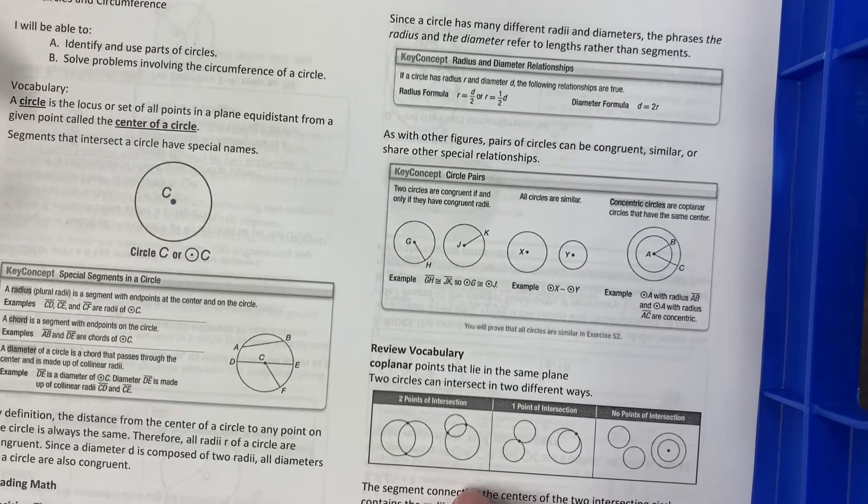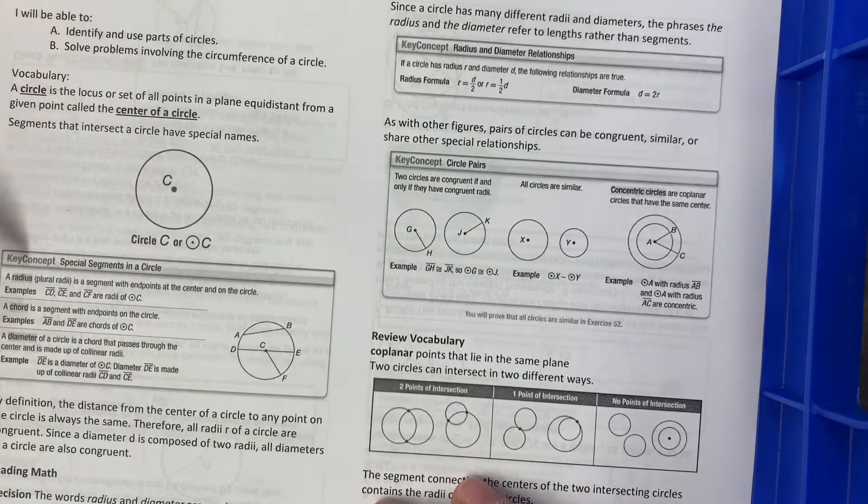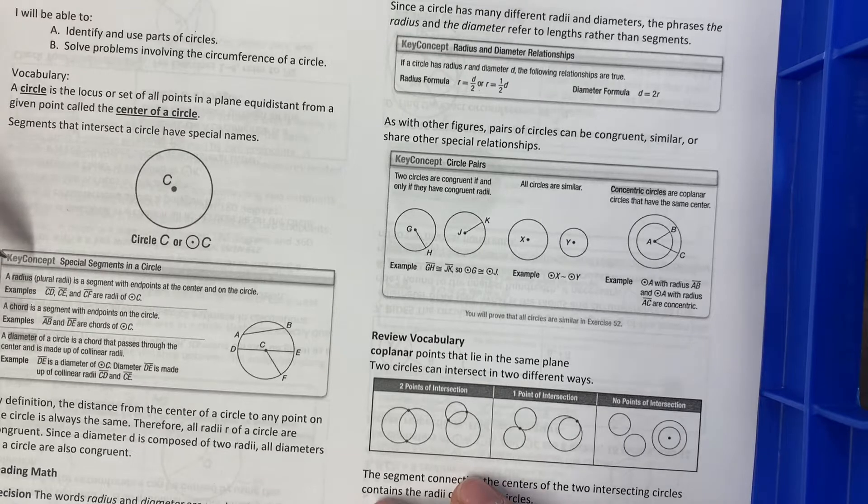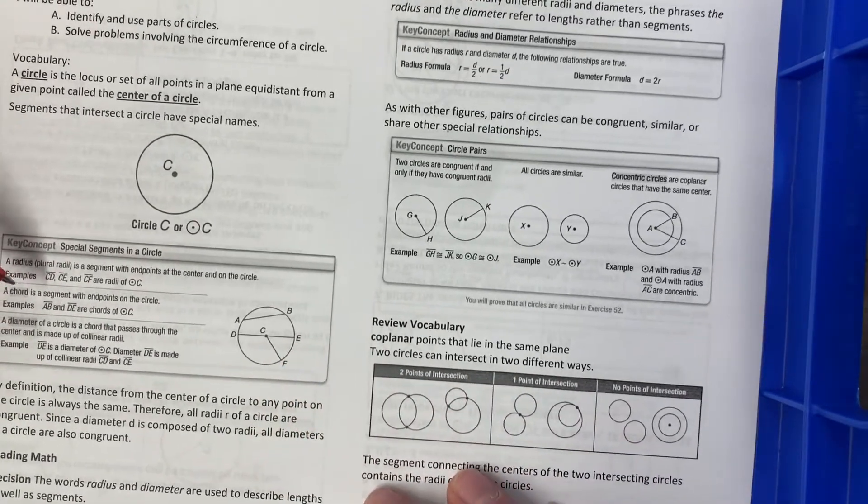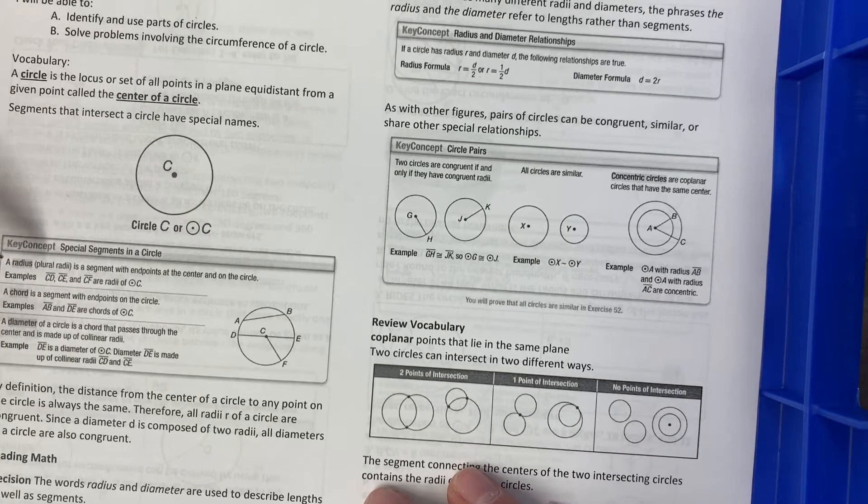Segments that intersect a circle have special names. A radius is a segment with endpoints at the center and on the circle. In this example, looking at this circle right here, CD, CE, and CF are all radii of circle C.